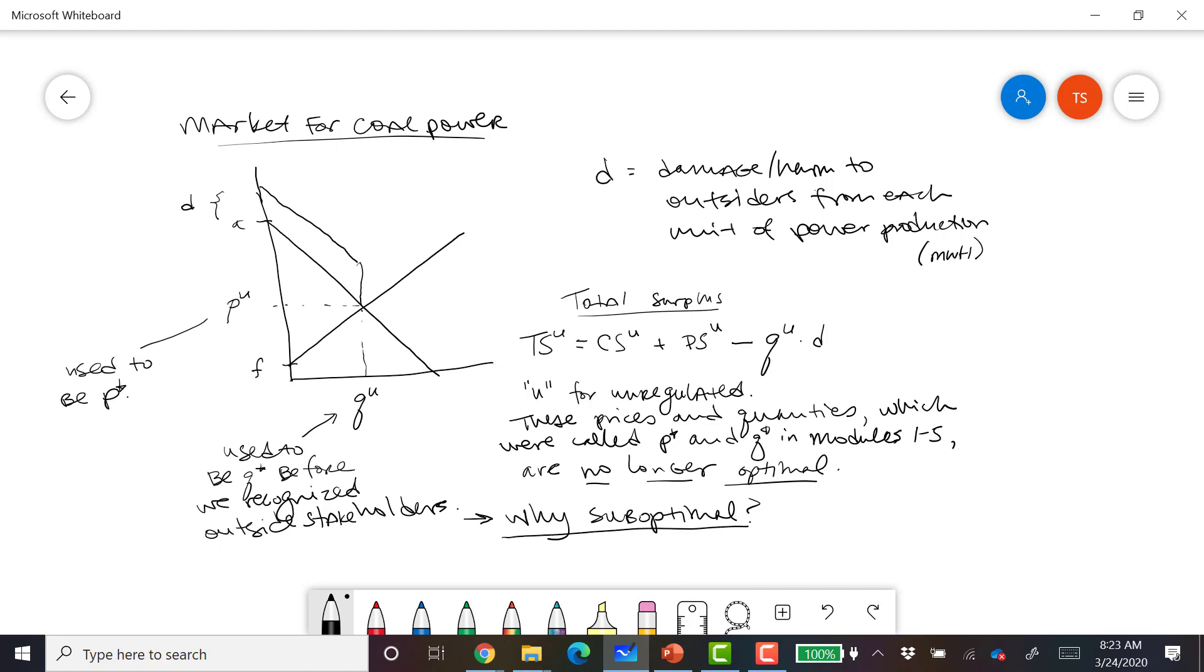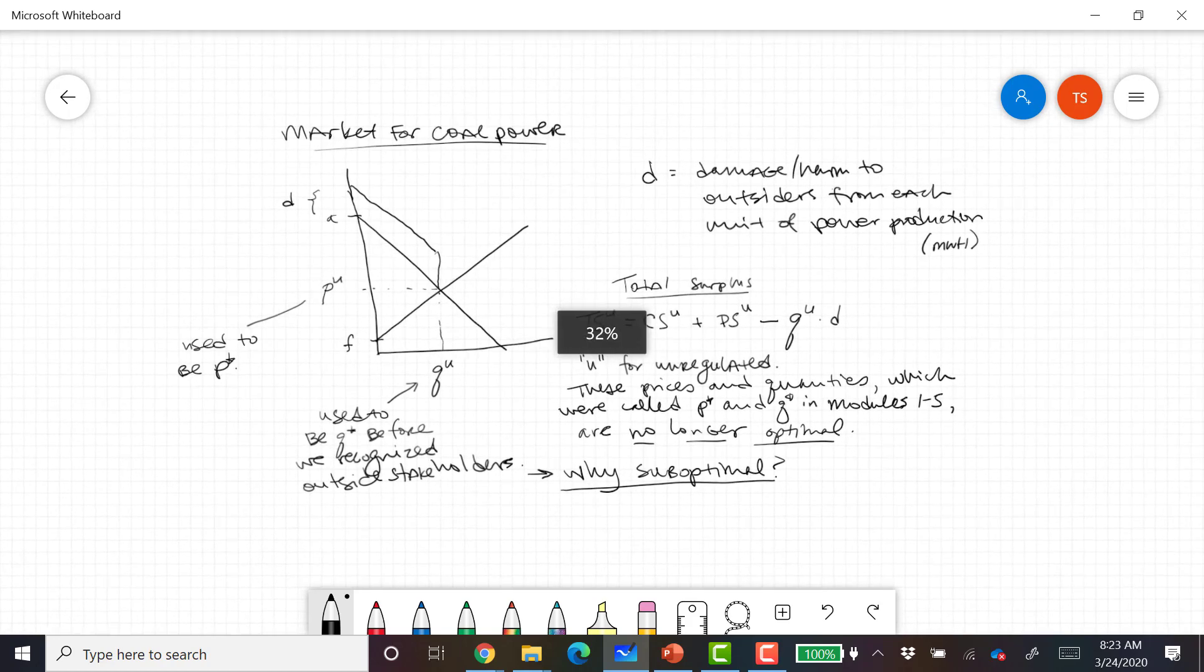And the answer is that if you go here and look at this graph, you can see that if we lower the quantity, then we can save a lot more damage than the lost surplus. Okay, so let's put a mark here on the graph so you can see it.